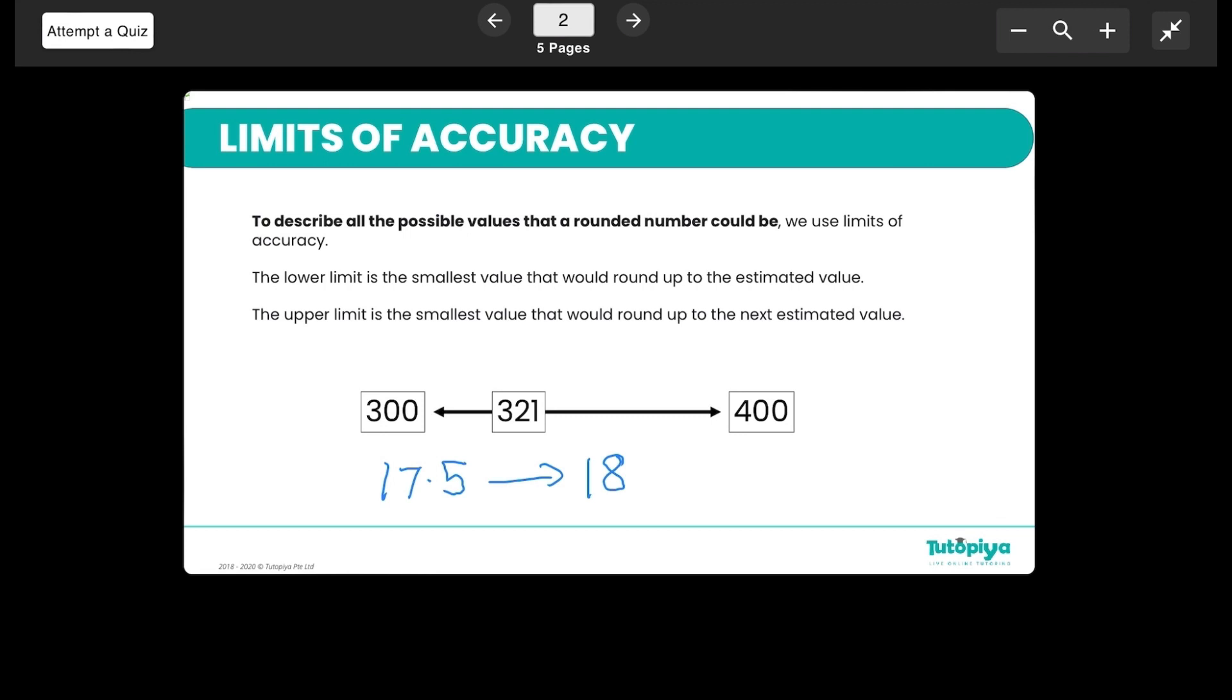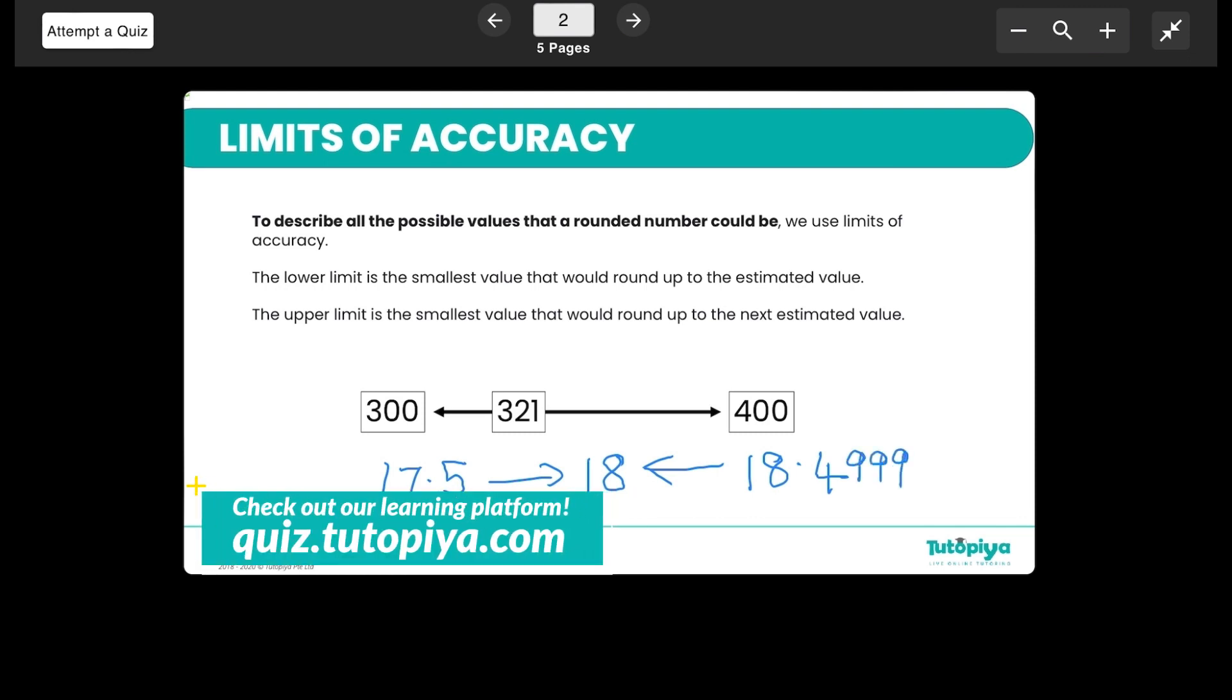At the same time, if I ask you what rounds down to 18, you all will tell me anything that goes 18.4999 will round down to 18. So what are these two limits? Basically, the limit of what is the smallest value that could round up to 18 and the highest value that could round down to 18 is called limits of accuracy.